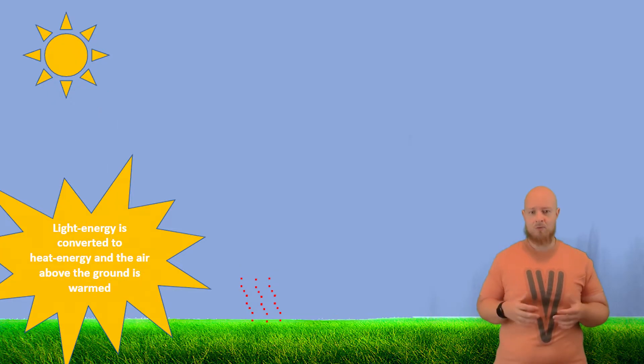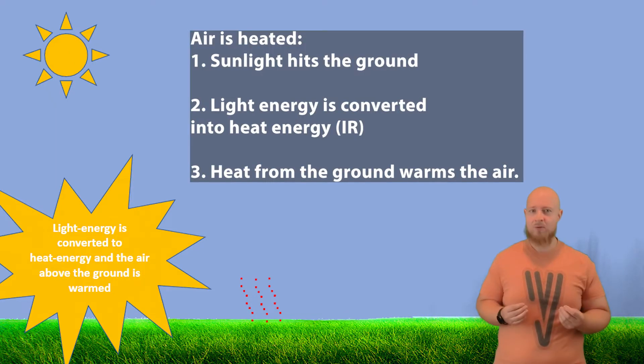The surface radiates or releases that light back up, but not as visible light. The surface releases infrared radiation, and IR radiation is one way to measure heat. So in more simple terms, the ground absorbs sunlight energy, which for us is mostly in the visible light spectrum, and releases or radiates back up heat energy in the infrared wavelength.